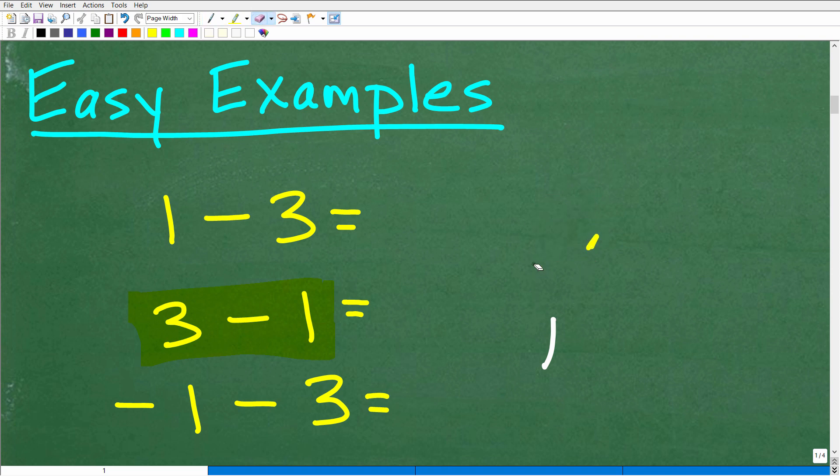So, you know, real basic counting concepts. 3 take away 1, or 3 minus 1 is, of course, a positive 2. All right. So, hopefully, everyone understands that.